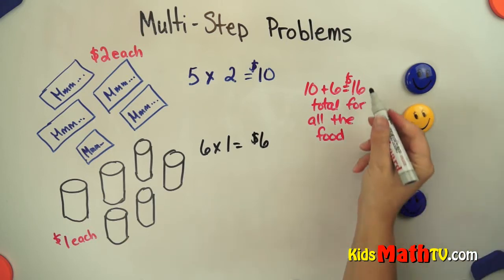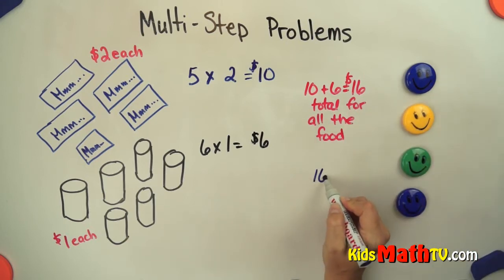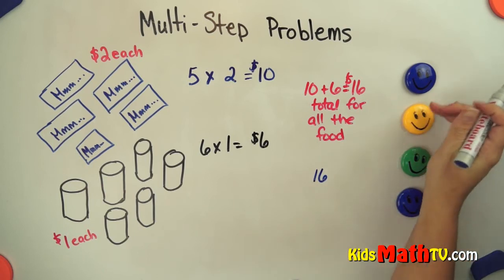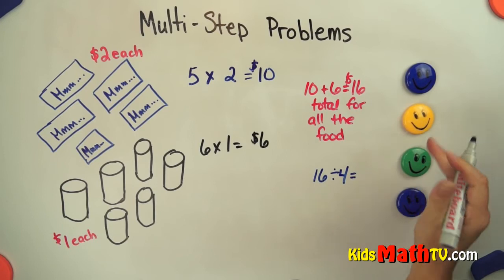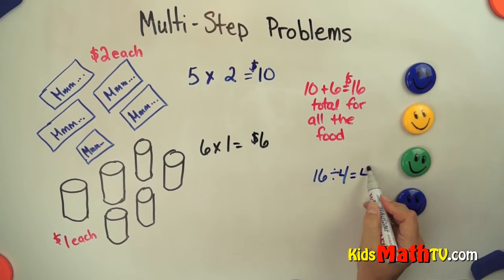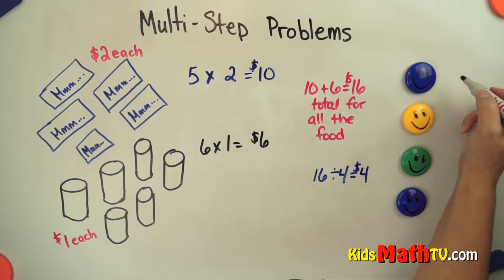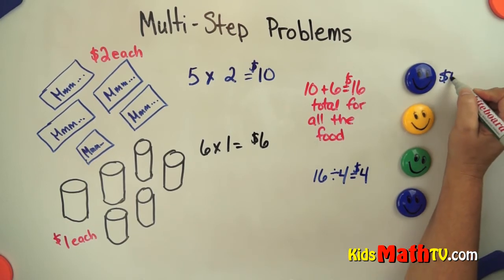We can take that $16 and divide it by the four friends, and that will give us how much each friend has to pay. And that is $4. So if each friend pays $4, they will have enough to cover the cost.